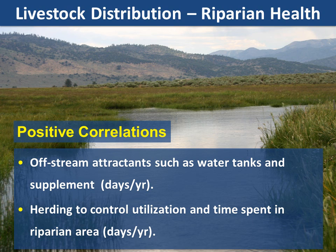To give you a glimpse of what we found relative to distribution: some of the positive correlations to riparian health were off-stream attractants such as water tanks and supplement, measured in days per year. There was a positive association between that activity and stream health. There was also a positive correlation between herding specifically to control utilization in the riparian area and time spent in that riparian area. Notably, simply asking 'do you have off-site water — yes or no?' or 'do you herd — yes or no?' were not significantly correlated. It was the amount of effort — the amount of time spent using these simple old tools — that achieved distribution and utilization. These tools are very effective.